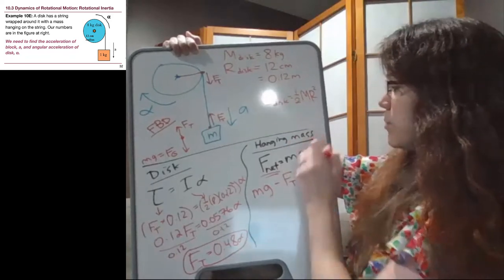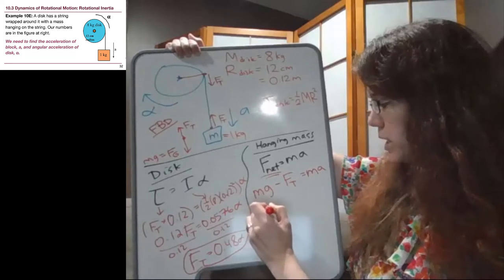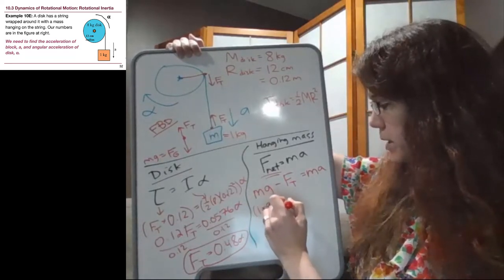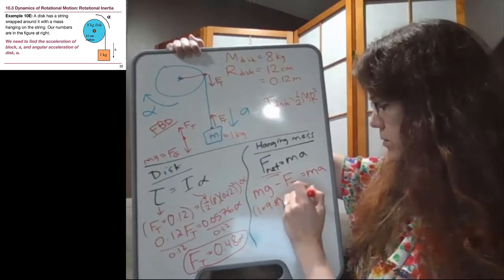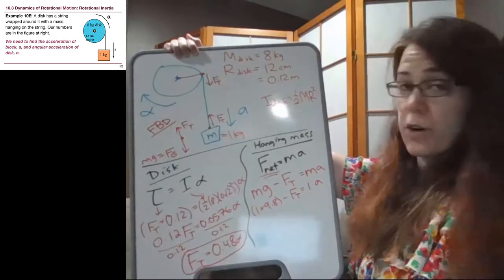So for this hanging mass, which is a mass of one kilogram, we have one times 9.8 minus our tension equals one times A.